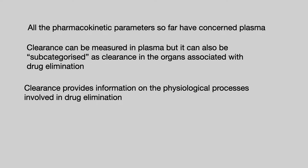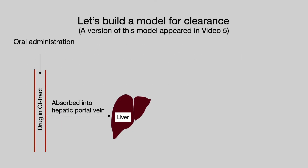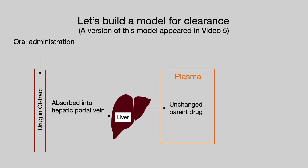To explain what I mean, and in the tradition of these videos, we will build a model of clearance. In fact, you first saw a version of this model in video 5 when we looked at absolute oral bioavailability. If you take a drug orally, it will go into the gastrointestinal tract. A portion of that drug is likely to be absorbed, and the absorbed drug will enter the hepatic portal vein and then go to the liver. In our simplified model, there are then two options: the unchanged parent drug can go straight through the liver and enter plasma where it will circulate around the body.